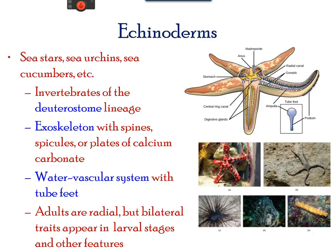Echinoderms are generally spiny and include species such as sea stars, sea cucumbers, and sea urchins. They have a pentaradial symmetry and an endoskeleton. These animals have a true gut, a portion of which is modified into a unique water vascular system — this system allows for gas exchange, nutrient circulation, and locomotion.